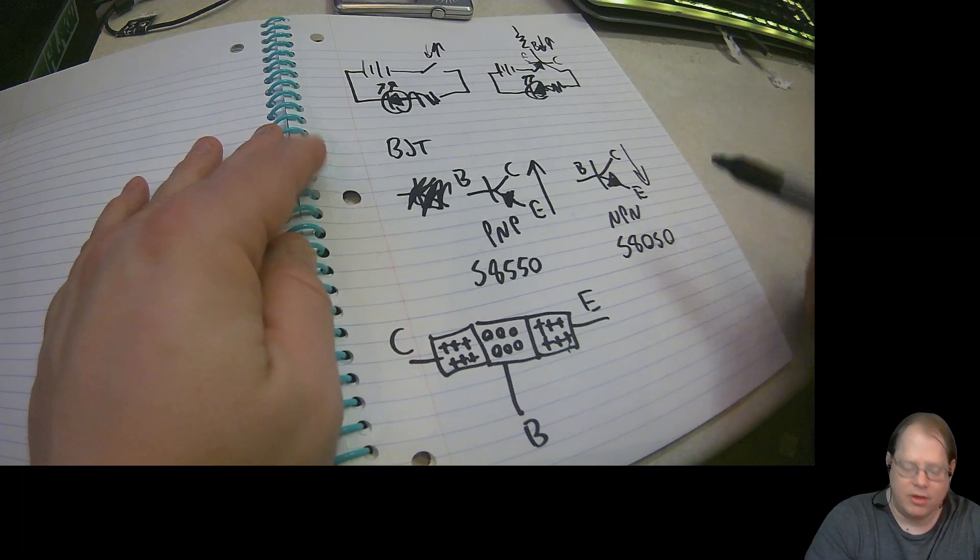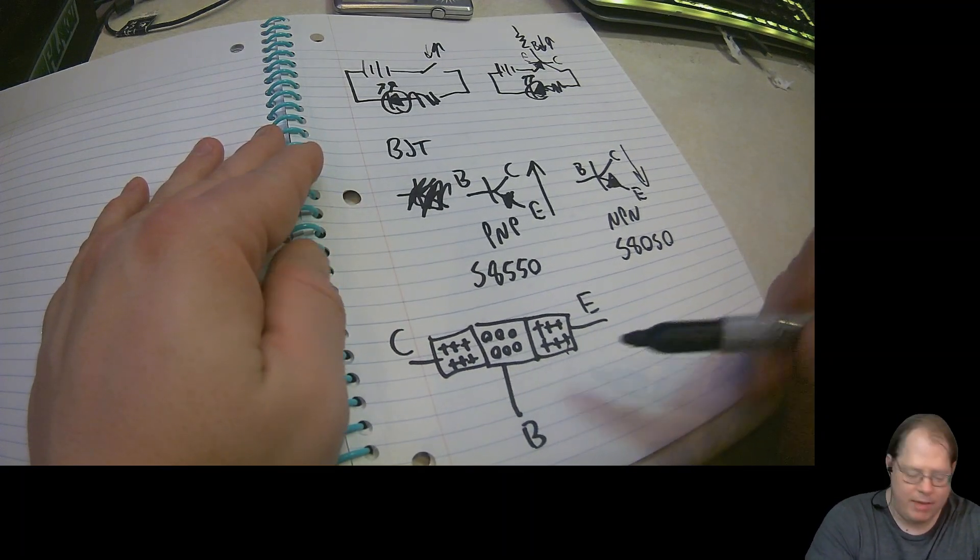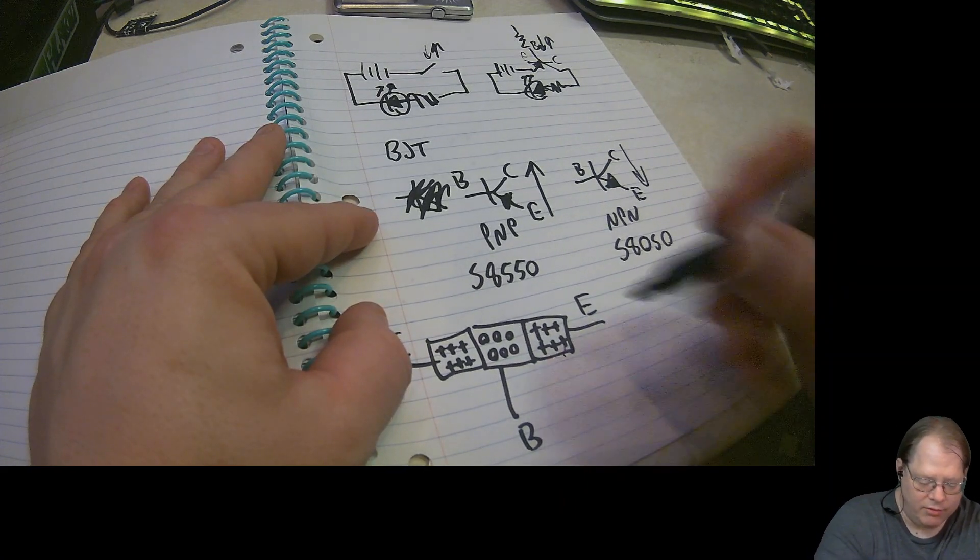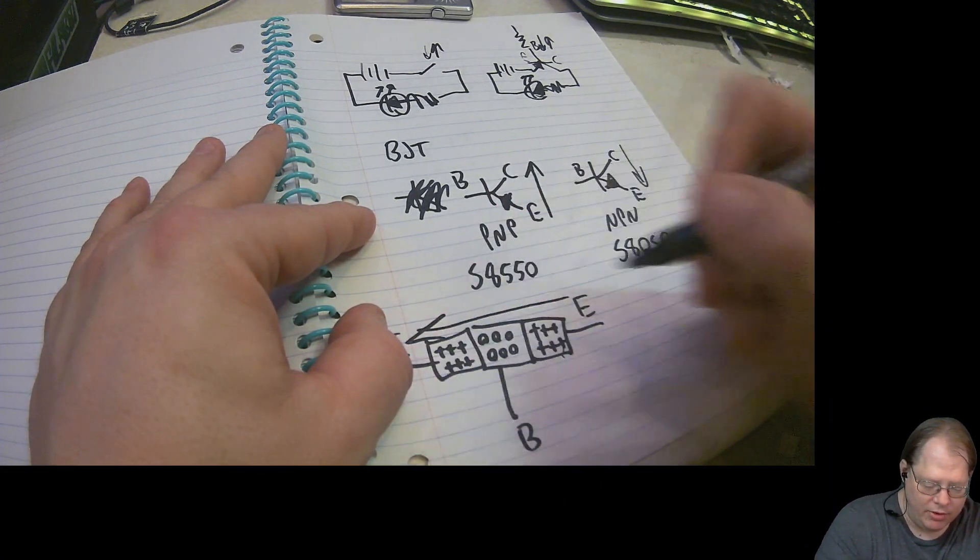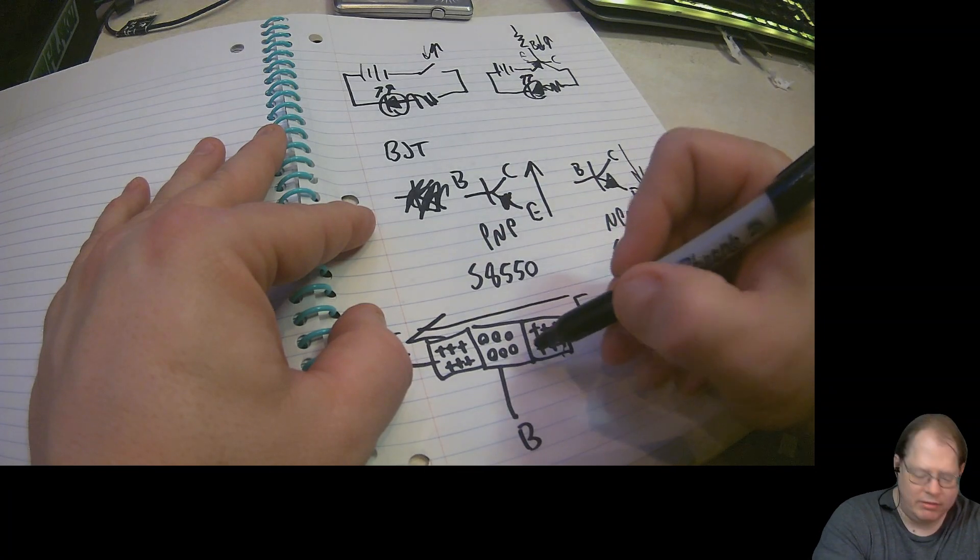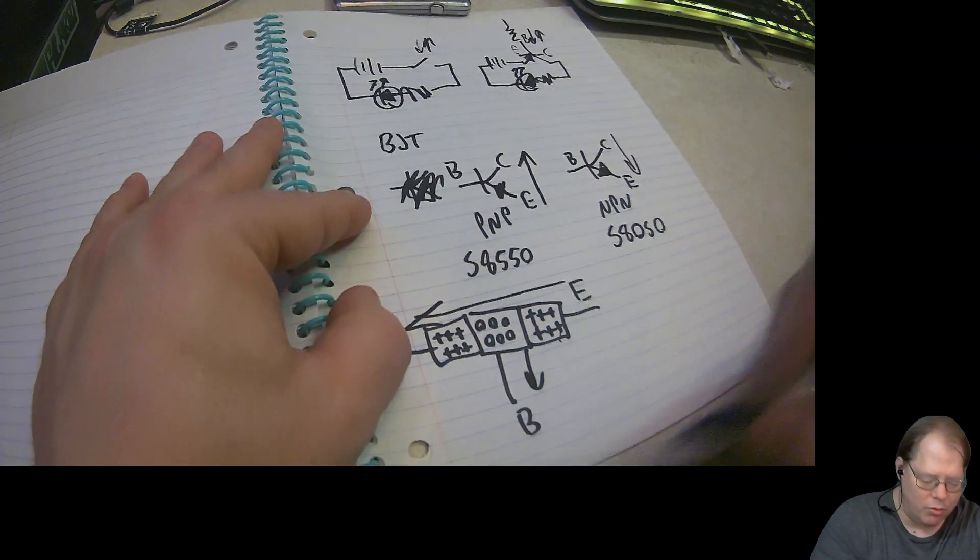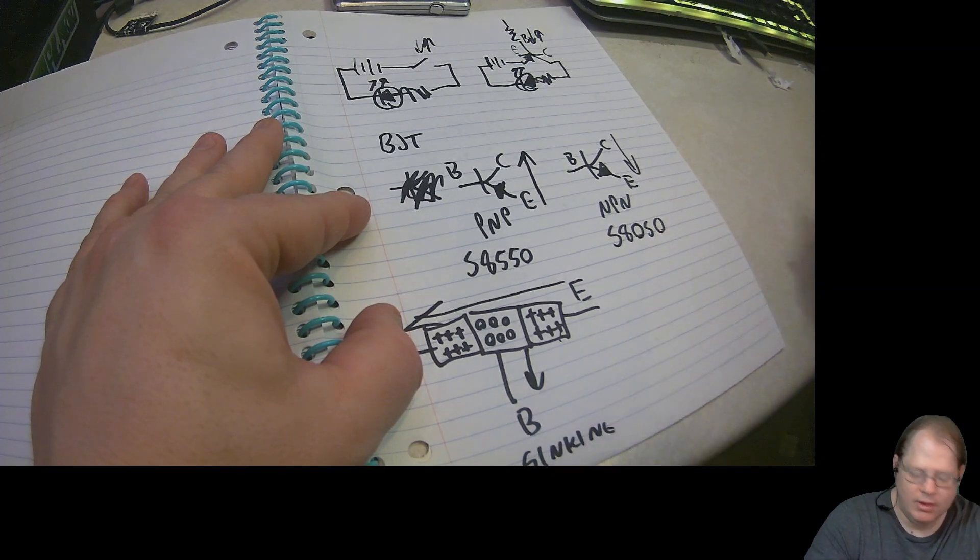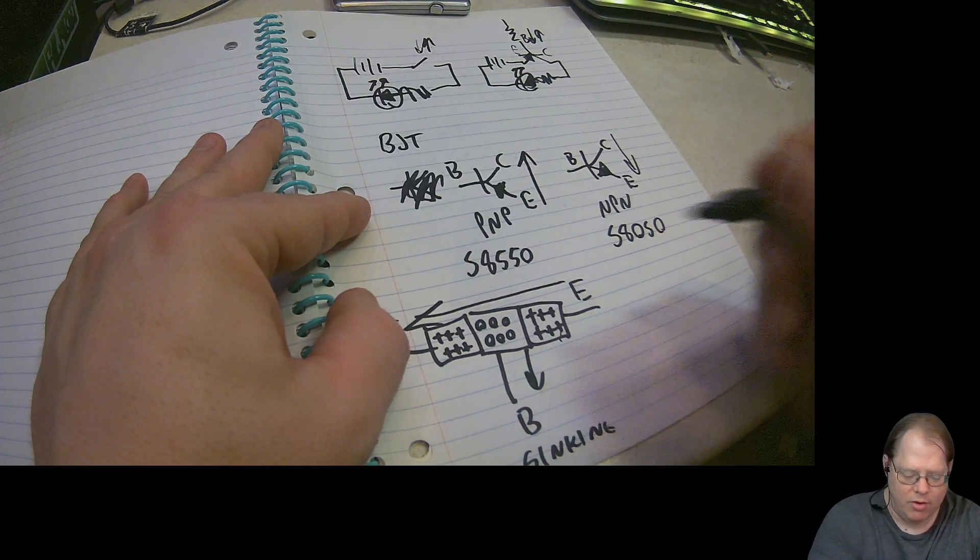So, you can see here the collector and the emitter are on the P-types. The base is on the N-type. In order to get current to flow from emitter to collector, I need to bring the N-type voltage down, or what we would call a sinking current, in order to make the current flow.